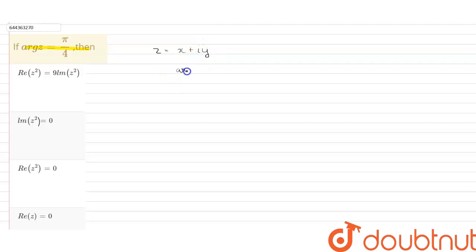We know that argument of z equals tan inverse y/x, which is given that it equals π/4.